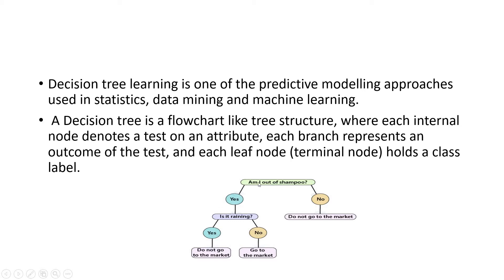This is a classification algorithm. I can explain the whole statement with this example: here is a tree-like structure which can be used to predict whether I need to go out to buy shampoo or not. If I already have shampoo, there's no need to go outside. So: am I out of shampoo? No — do not go to the market. Yes — you need to go, but suppose it is raining cats and dogs outside, so you cannot go.